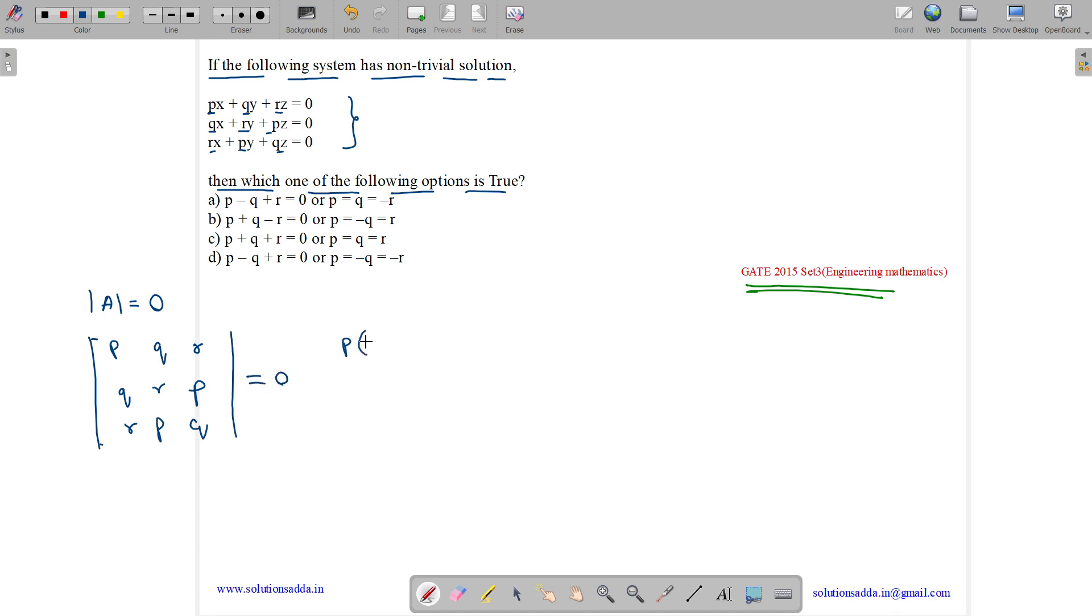Calculating the determinant, we get P into RQ minus P square, minus Q into Q square minus PR, plus R into QP minus R square.